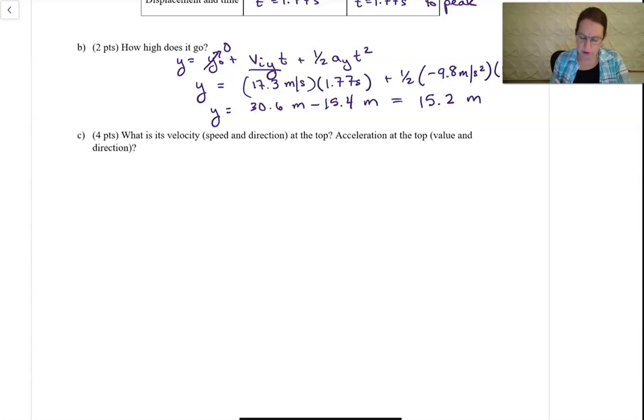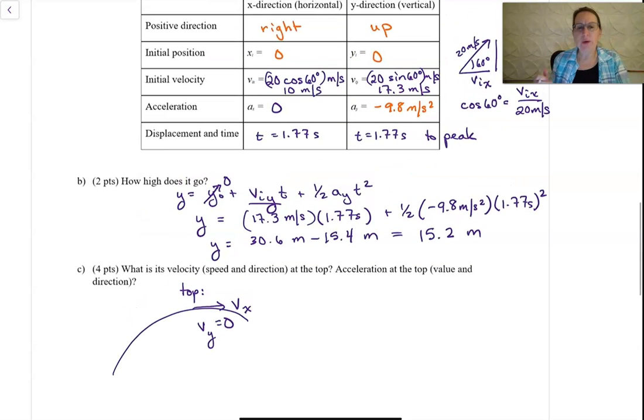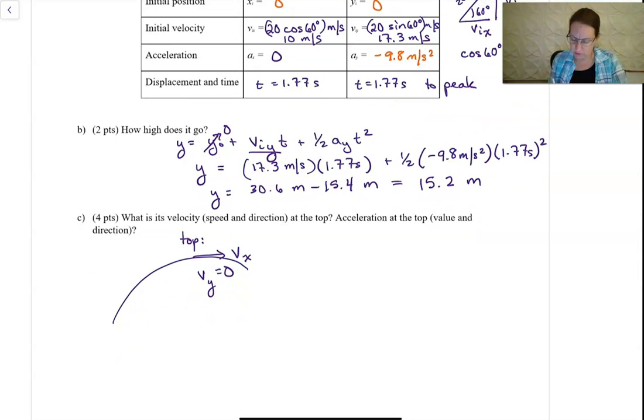The third part of this asks what's its velocity, and that is speed and direction at the top. Well, at the top, it still has a velocity in the X direction. But V_Y is equal to 0 at the top, because it's turning around. It's going up and then down. So you can just say it's equal to V_X, but if there's no acceleration, that has to be the same as the initial velocity. So that would be 10 meters a second. So the velocity at the top is 10 meters per second in the i-hat direction plus 0 in the j-hat direction.